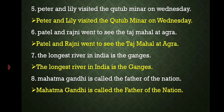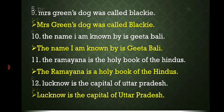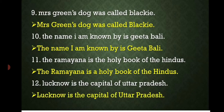'Mahatma Gandhi is called the father of the nation.' — 'Mahatma Gandhi' is a name of a person. 'Mrs. Green's dog was called Blackie.' — 'Mrs. Green' and 'Blackie' are names, so they begin with capital letters. 'The name I am known by is Geetabali.' — 'The' begins the sentence with a capital letter, and 'Geetabali' is a name of a person. 'The Ramayana is a holy book of the Hindus.' — 'Ramayana' is the name of a holy book. 'Lucknow is the capital of Uttar Pradesh.' — 'Lucknow' and 'Uttar Pradesh' are names of places, both with capital letters.